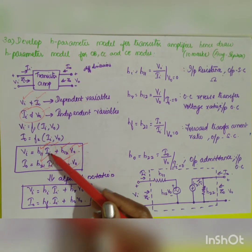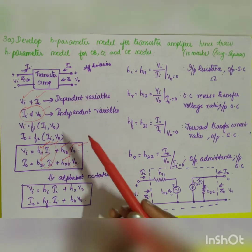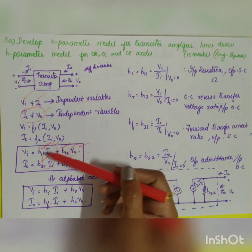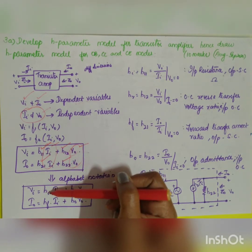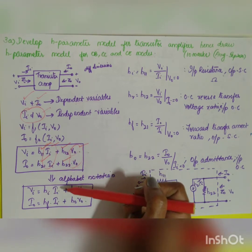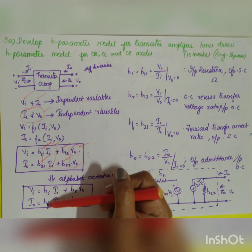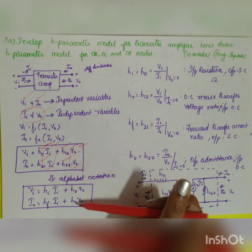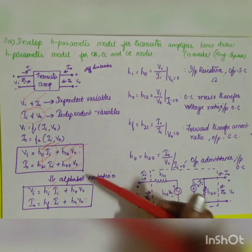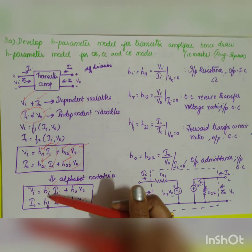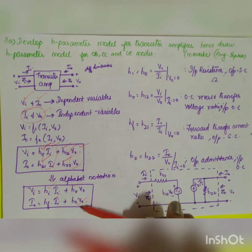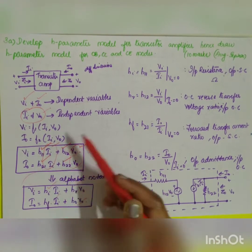The word 'hybrid' is used because all parameters have different dimensions. The parameters can be replaced by alphabetic letters: h11 is replaced by hi (input), h12 by hr (reverse), h21 by hf (forward), and h22 by ho (output). So: Vi = hi·Ii + hr·Vout and Iout = hf·Ii + ho·Vout. This is the generalized hybrid parameter equation.